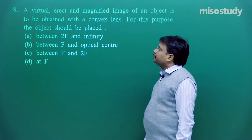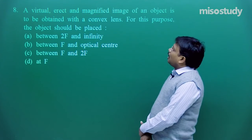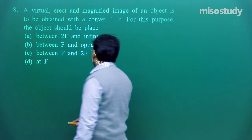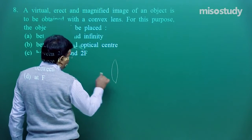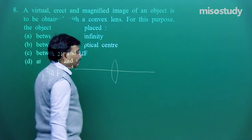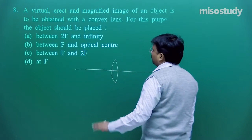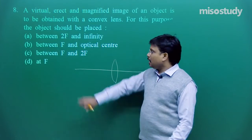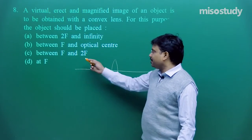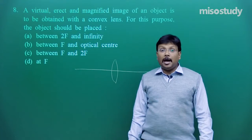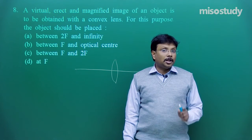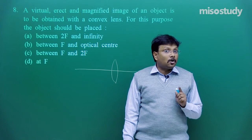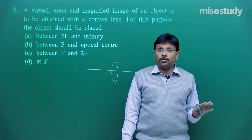Then comes question number 8. A virtual erect and magnified image of an object is to be obtained with a convex lens, convex lens, principal axis, then pole, f, c, other points. For this purpose, the object should be placed where? Now, here I am not going to tell you the answer, the answer is c between f and 2f. But what should be the approach? First thing, please go through with the rules which I explained in one of my videos about the image formation using concave and convex lenses, all those rules I explained, four rules.